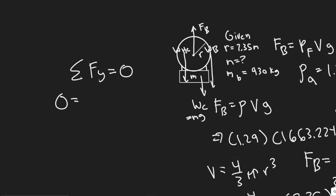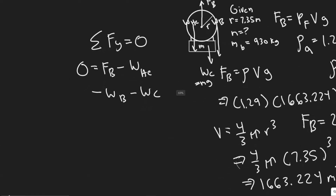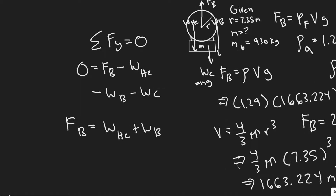Setting up the equilibrium equation: forces upward are positive, forces downward are negative. So zero equals FB minus W_HE minus W_balloon minus W_cargo. This tells us the buoyancy force equals the weight due to helium plus the weight due to the balloon plus the weight due to the cargo.